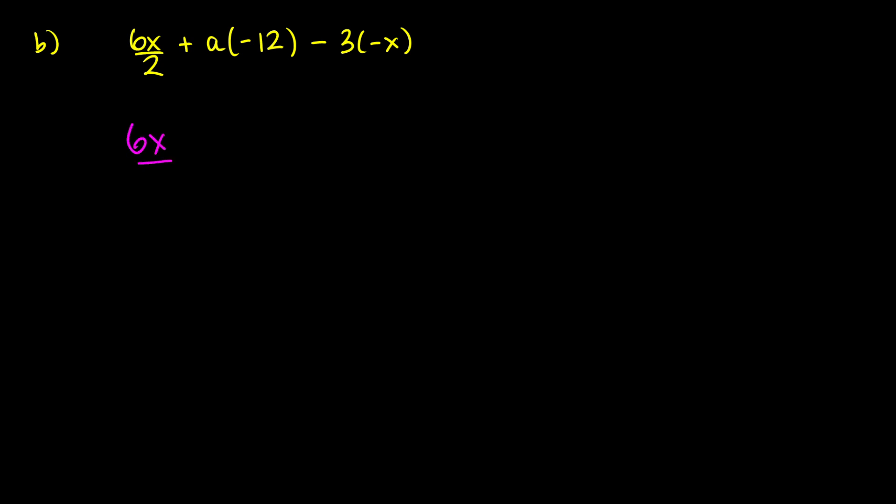Let's take a look at how we can simplify 6x over 2. Well, this is the same thing as six over two times x. If we think about six over two, six divided by two is just the same thing as three. We can't do anything with x. So 6x over 2 gives us 3x.